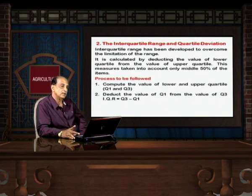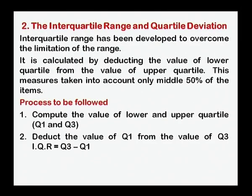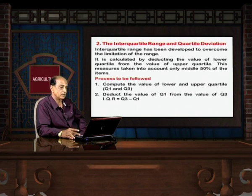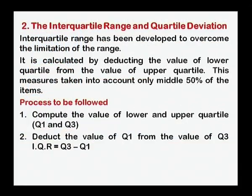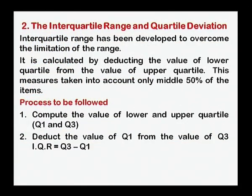We have to adopt the second method to overcome the limitations of the range method. The second method is interquartile range or quartile deviations. Interquartile range has been developed to overcome the limitations of the range. It is calculated by deducting the value of the lower quartile from the value of the upper quartile — that is, we calculate Q1 and Q3 and find the difference. This measures take into account only the middle 50 percent of the items. The process: first compute the value of Q1 and Q3, then deduct Q1 from Q3 — interquartile range = Q3 − Q1.